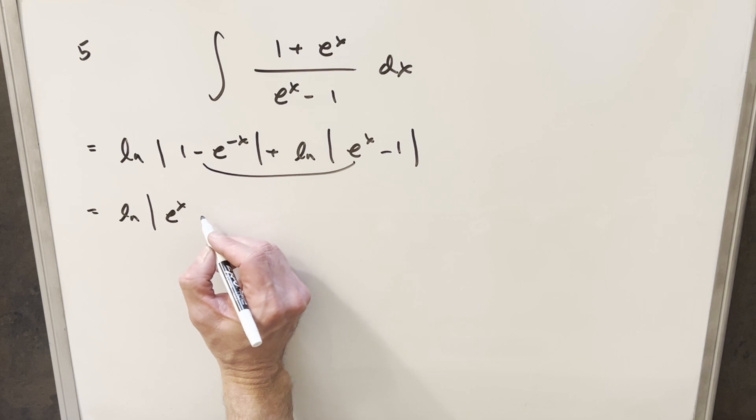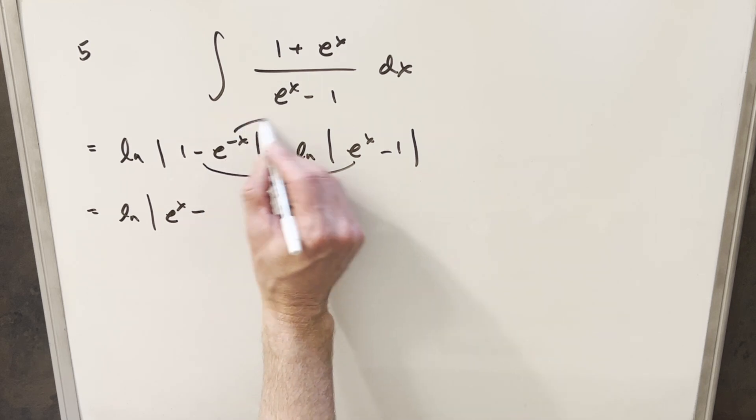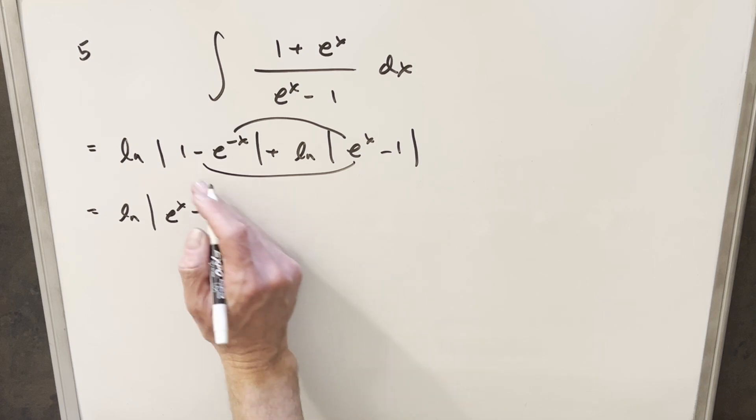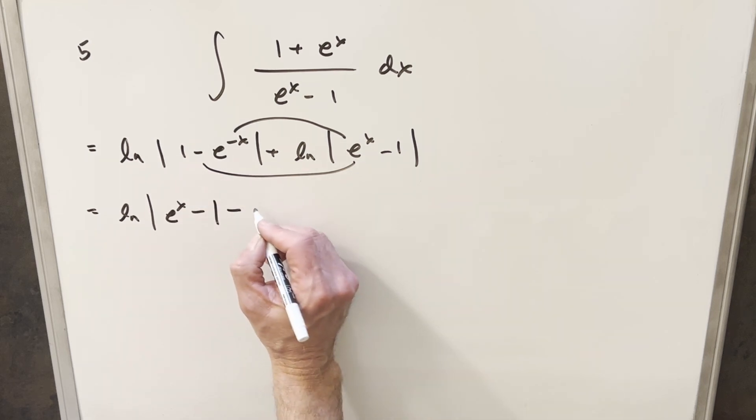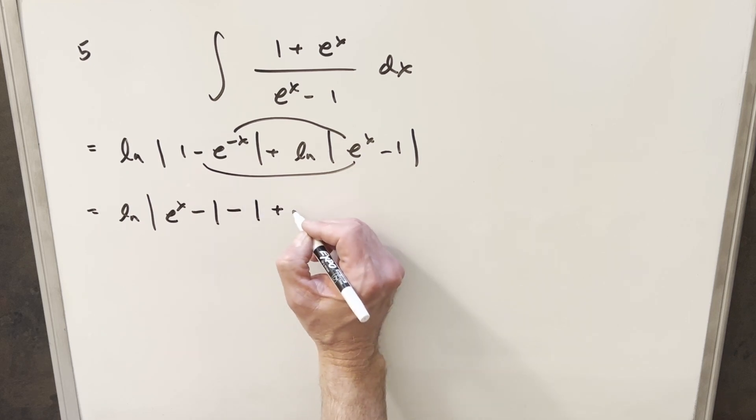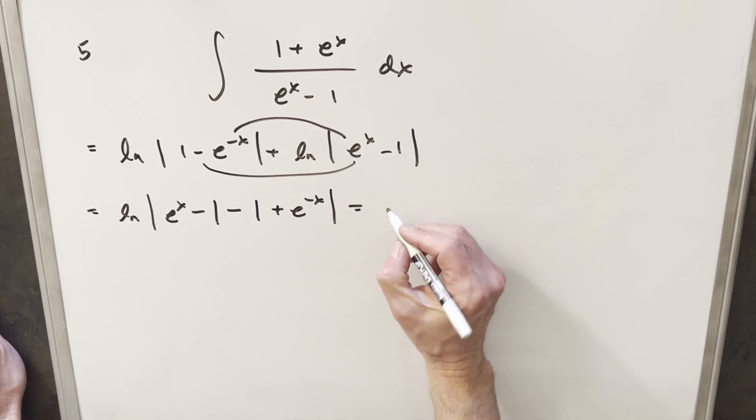1 times e to the x is e to the x minus the middle terms. This is going to give me e to the 0 or just 1. 1 times minus 1 minus 1. Minus 1 times minus e to the x plus e minus x. And so I'll just put everything together.